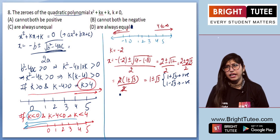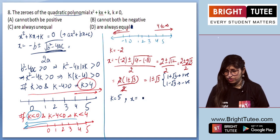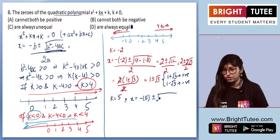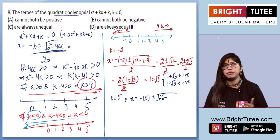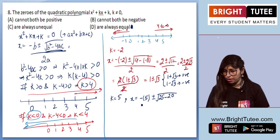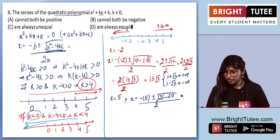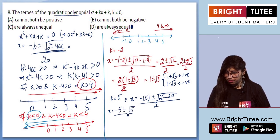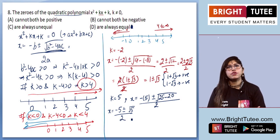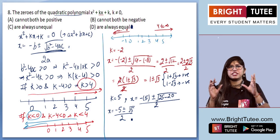Now let's try k = 5, which is greater than 4. Using the quadratic formula: x = [−5 ± √(5² − 4(1)(5))] / 2(1) = [−5 ± √(25 − 20)] / 2 = [−5 ± √5] / 2.